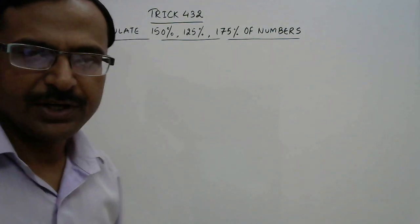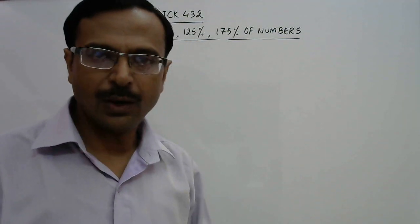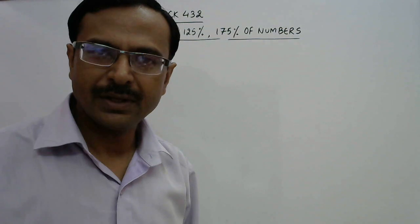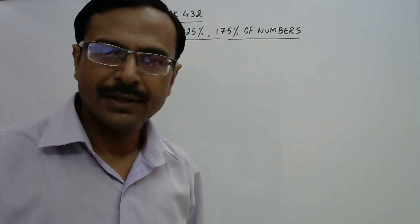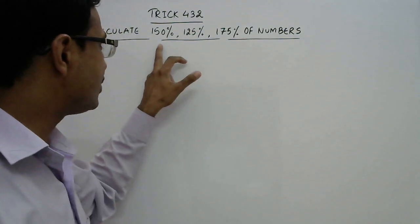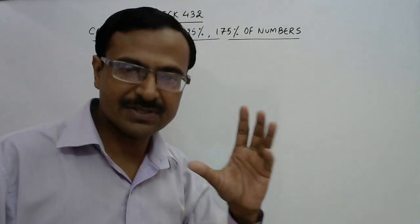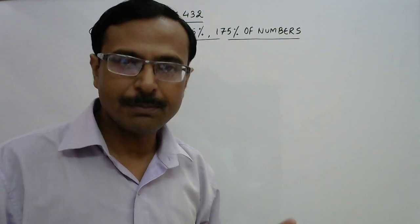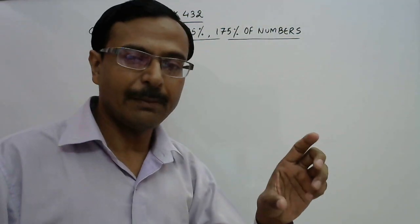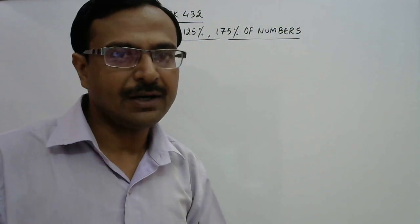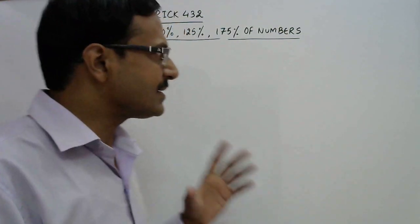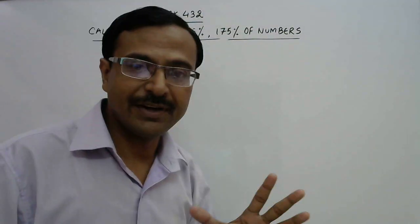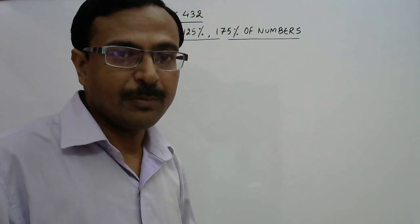On popular demand, I am putting up this video to illustrate how you can calculate percentages beyond 100 — that is, if the original number is say 72, then 150%, 125%, or 175% of that number will be more than the original number. So whatever percentages are beyond 100%, the new number obtained will be greater than the original number.